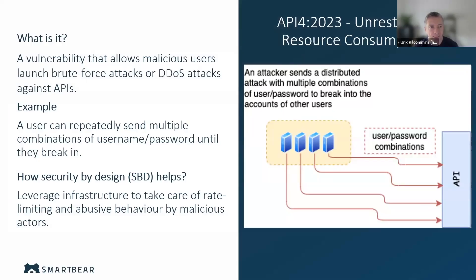The next one we have is unrestricted resource consumption. This went through a bit of an evolution in 2023. For anyone familiar with 2019, this would have been referred to as lack of resources and rate limiting. This is a vulnerability that would allow malicious users to launch brute force attacks or denial of service attacks against our API.